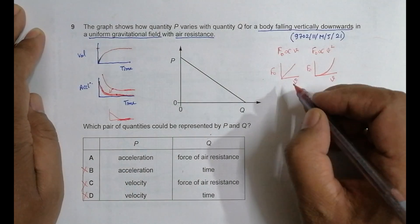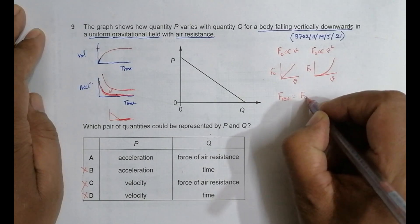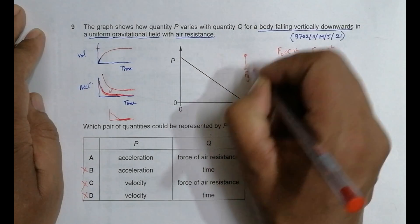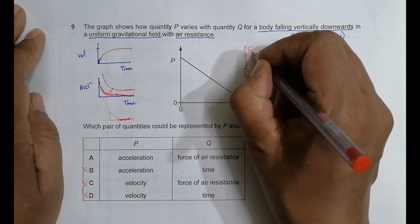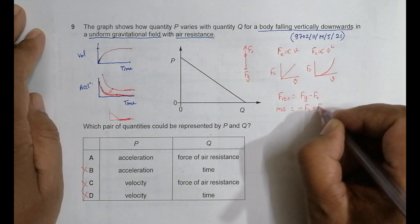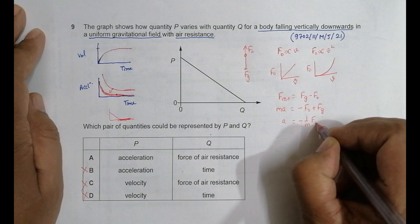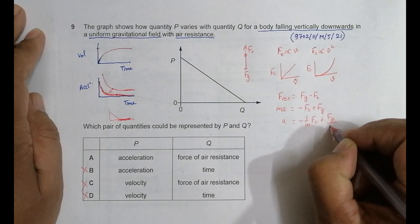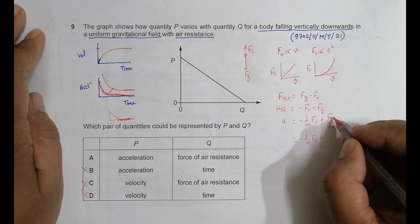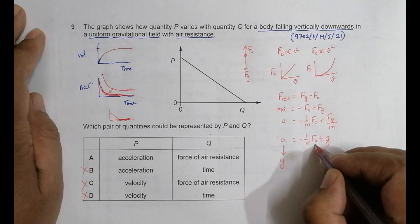For choice A, if there is air resistance, the resultant force equals the gravitational force minus the opposing force: F_net = F_g − F_o, so ma = mg − F_o. This gives acceleration a = g − (1/m)·F_o, or equivalently a = −(1/m)·F_o + g.